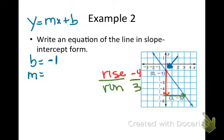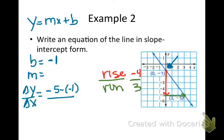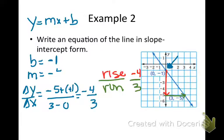What about if I calculate it as change in y over change in x? The change in y could be represented by negative 5 minus negative 1, and the change in x as 3 minus 0. Remember that negative 5 minus negative 1 is the same as negative 5 plus positive 1. So that would be negative 4 over positive 3, confirming the slope is negative 4 thirds.